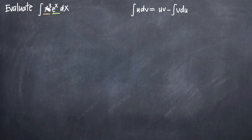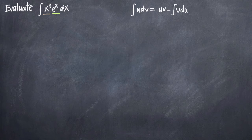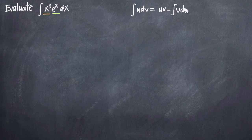So the first thing that we should think is to try to use integration by parts to evaluate this integral. Whenever you have two functions like this and they're multiplied together, integration by parts should be your first thought. I've gone ahead and written the integration by parts formula over here on the right.